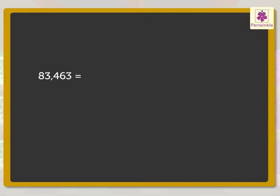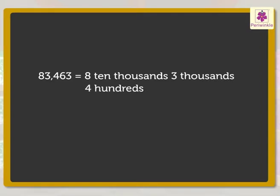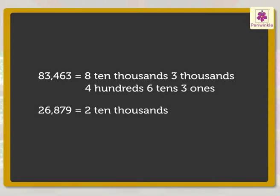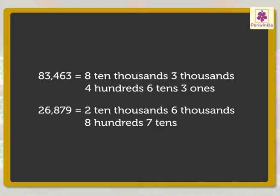Thus, there are 8 ten-thousands, 3 thousands, 4 hundreds, 6 tens and 3 ones purple onions, and 2 ten-thousands, 6 thousands, 8 hundreds, 7 tens and 9 ones spring onions.